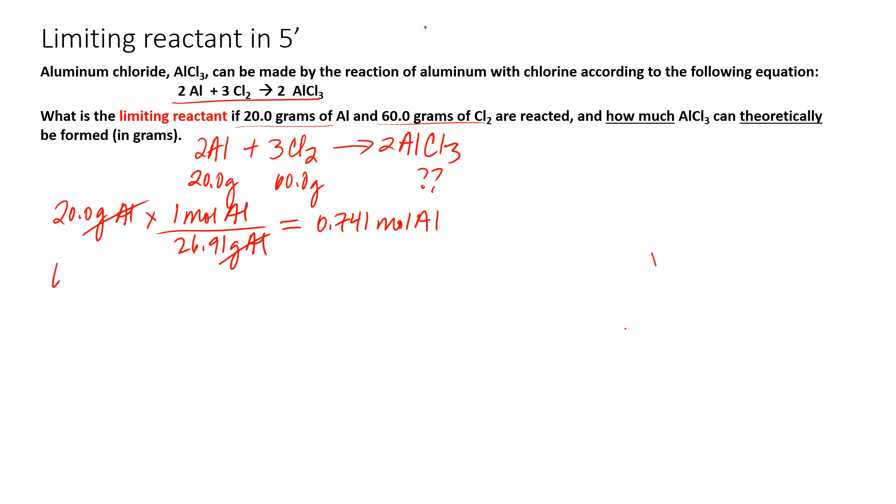Next up is chlorine gas. Chlorine gas is a diatomic molecule. So we have to use that molar mass, one mole of Cl2 per 70.91 grams of Cl2. Again, grams cancel. We're left with moles of Cl2, which is 0.846 mole of Cl2.